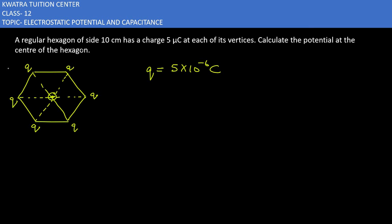The side length is 10 centimeter. We must convert 10 centimeter to meters by dividing by 100, which gives 0.1 meter. Now we'll find the potential at center due to all charges.